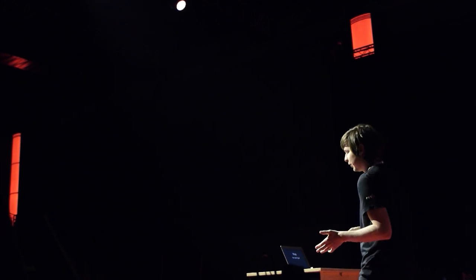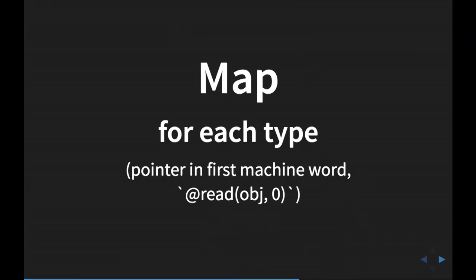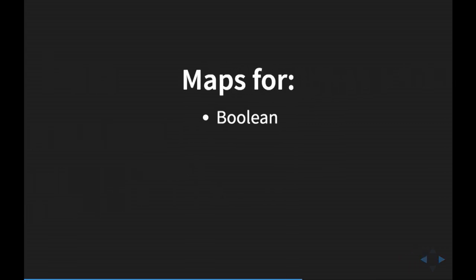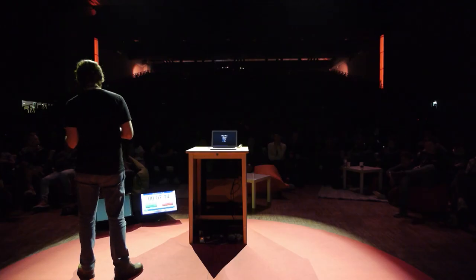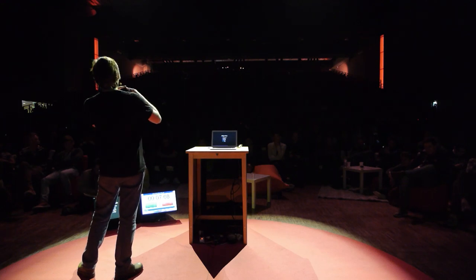The way V8 does it is by introducing another kind of object called maps. A map is essentially an object type — this is really V8's internal terminology, so if you ever decide to check V8's source, you'll see lots of this. There is a map for each type, and the map is stored in the first machine word of every object in V8. There is a map for Boolean, for strings, for various types of strings, for JavaScript objects themselves, and of course there is a map for a map itself. Maps arrange themselves in a tree-like structure, with the root of the tree looping into itself.